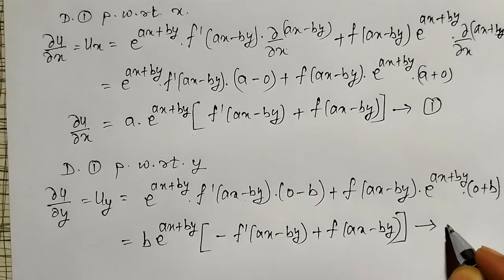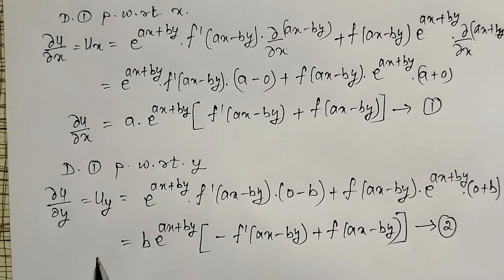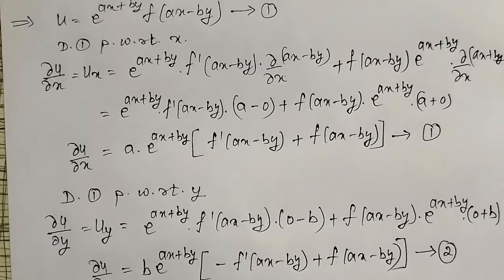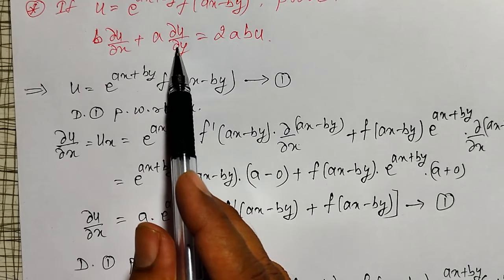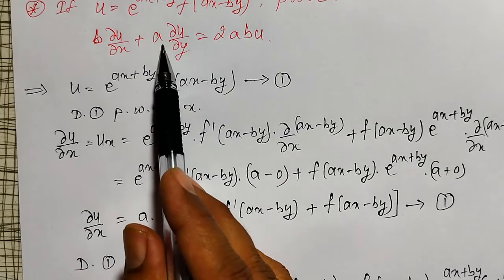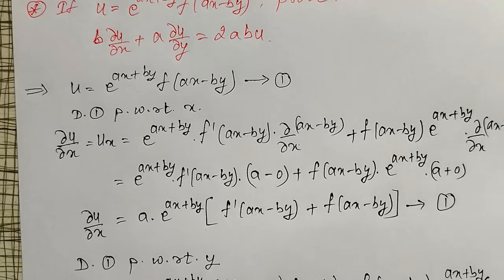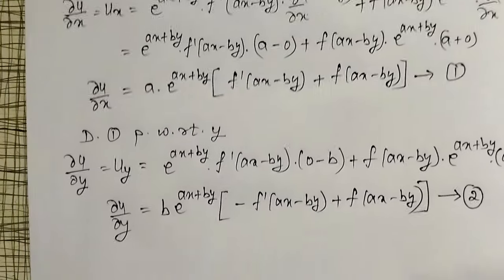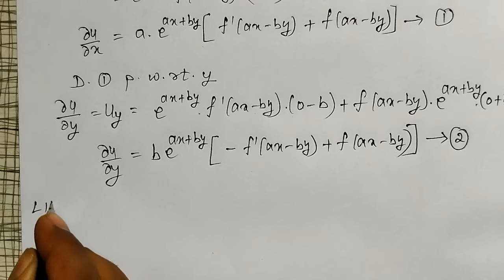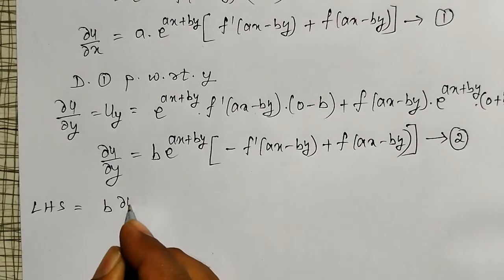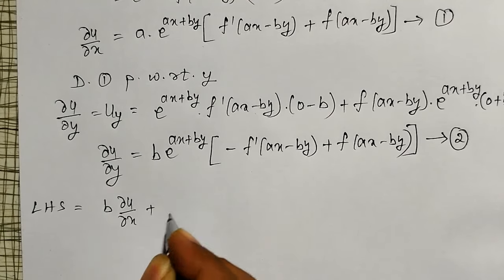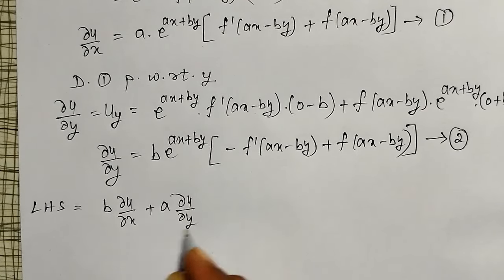Let me call this as equation number 2. In equation 1, ∂u/∂x has been calculated. In equation 2, ∂u/∂y has been calculated. And what I have to prove here? I have to prove that b into ∂u/∂x plus a into ∂u/∂y equals 2ab·u. Let me consider this as the left hand side and then try to prove it. LHS equals b into ∂u/∂x plus a into ∂u/∂y.